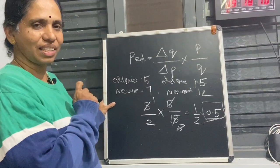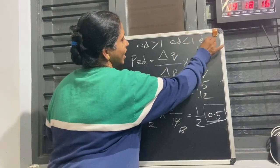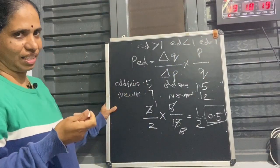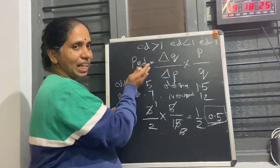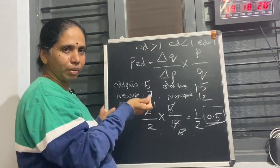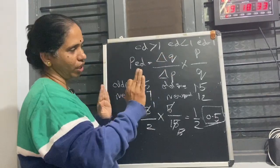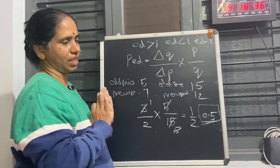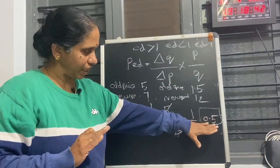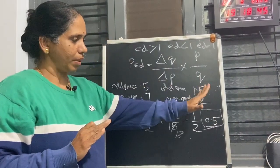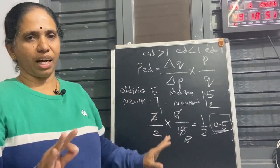Now, is the response more or less? If Ed is greater than 1, the demand is elastic — response is more. If Ed is less than 1, the demand is inelastic — response is lesser. If Ed equals 1, it is unitary elastic — both change equally. In our sum, Ed equals 0.5, which is less than 1, so it is inelastic. The reaction or response of price and quantity demanded is inelastic — the response is less. According to the sum given in your book, if you explain this much, it is enough. Thank you, girls.